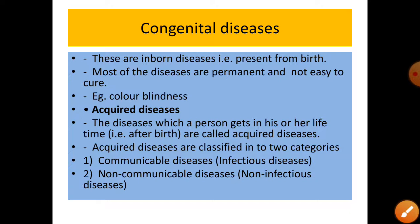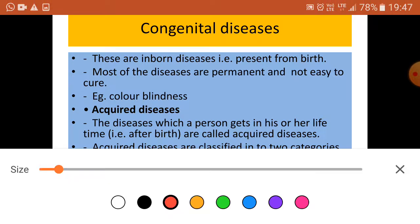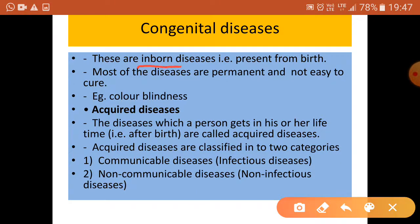The next type is congenital disease. These are inborn diseases — they are present since birth. Most of these diseases are permanent and not easy to cure. For example, color blindness.